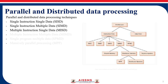Distributed processing is used in many systems like the internet, wireless communication networks, and cloud computing services. It allows for increased system reliability and performance, and it is used to build more robust and scalable systems.